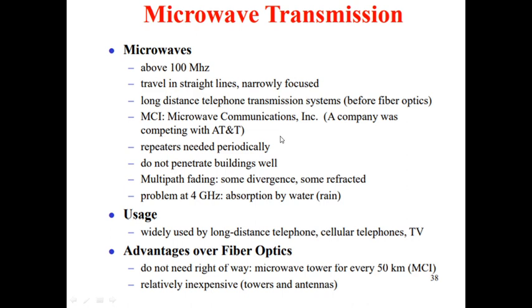Next is microwave transmission. Microwaves operate above 100 MHz, travel in straight lines, and are narrowly focused. They are used for long-distance telephone transmission systems. AT&T Bell Laboratories used microwave communications. Repeaters are needed to repeat the signals received at each center. Microwaves do not penetrate buildings well. They also use multipath fading, where divergence or refraction can occur. During rain, signals can be absorbed. Microwaves are used by long-distance telephone, cellular telephones, and TV.